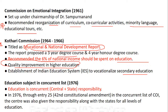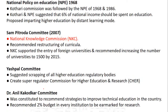Education entered the Concurrent List at the 42nd Constitutional Amendment in 1976, giving joint responsibility to the Centre and State for all levels of education. In very old examination cycles, there was a question on which list education belongs to — Concurrent List. National Policy on Education of 1968 and 1986 again suggested the Kothari Commission recommendation of spending six percent of national income on education, and proposed imparting education by distance mode of learning.